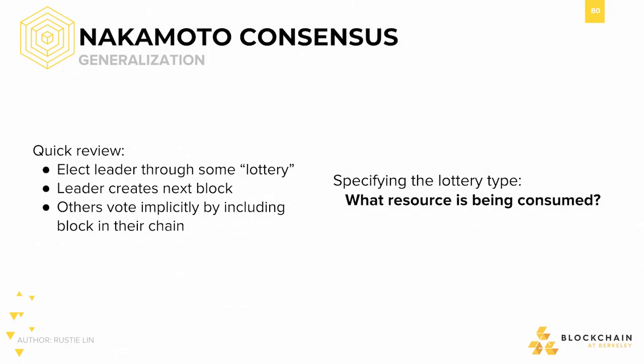In general, Nakamoto Consensus delivers a few key properties. First off, this paradigm serves as a way to come to consensus with unknown, untrusted peers. In Bitcoin, the first distributed system to use Nakamoto Consensus — hence the name Nakamoto Consensus — anyone can join or leave the network at any time and even send corrupted or false messages to others.